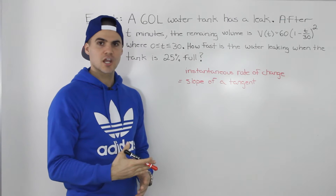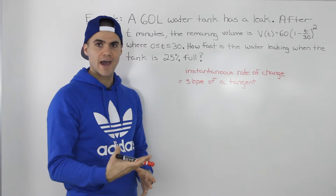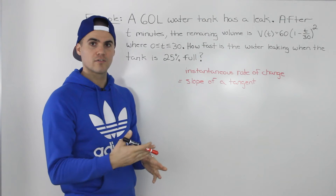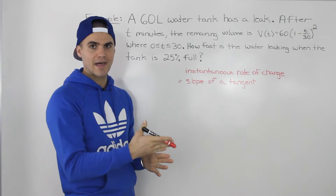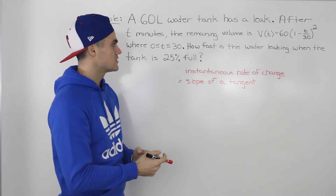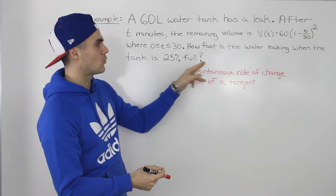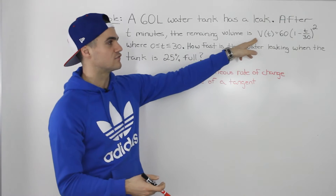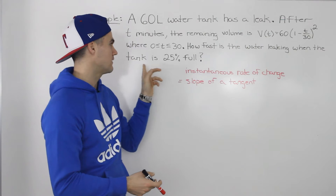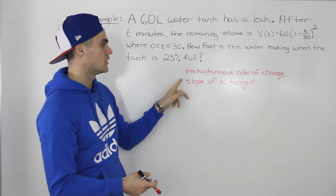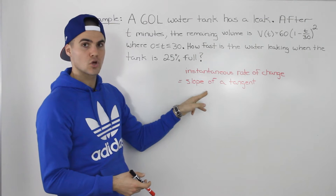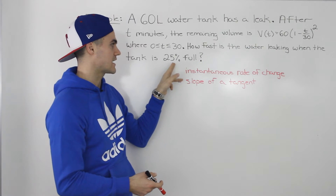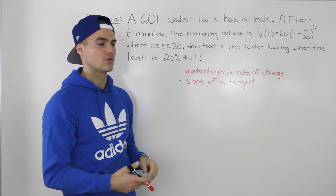The instantaneous rate of change of a function at a certain point in time is the same as the slope of the tangent of that function at that same point. So since they're asking how fast the water is leaking, we need to find how fast the volume is changing when the tank is 25% full — that means finding the slope of the tangent on this function at that point.